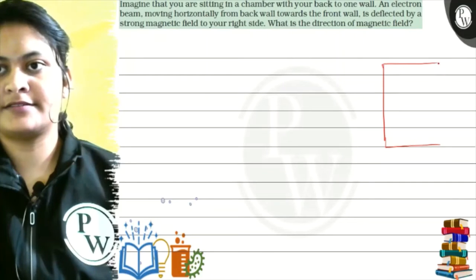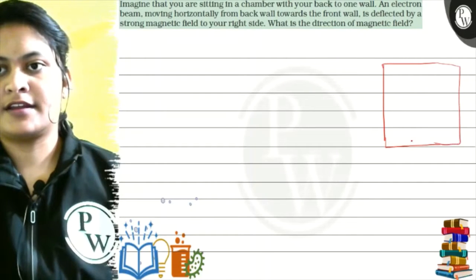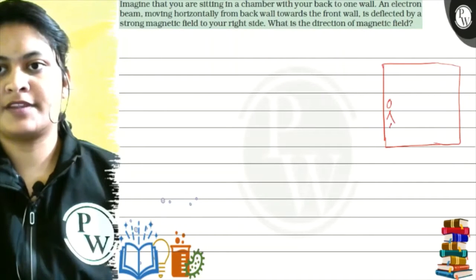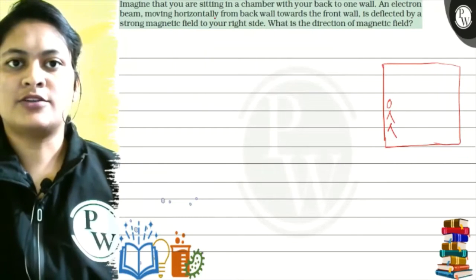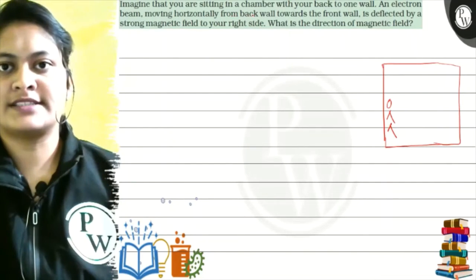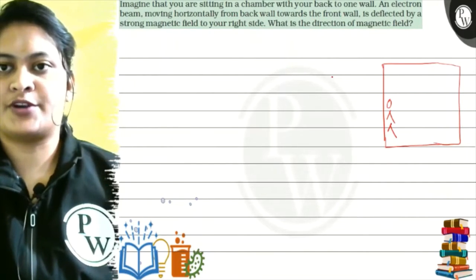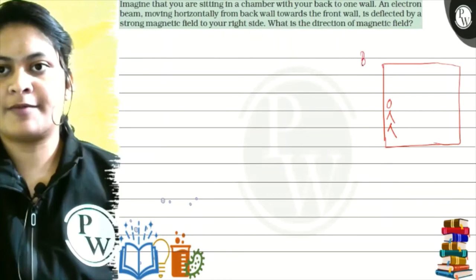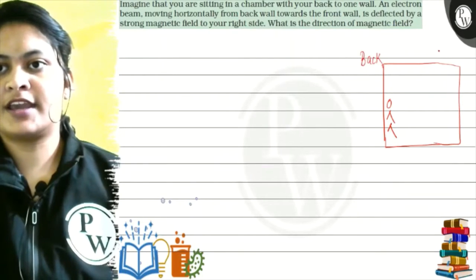We are sitting here. Right? An electron beam is moving horizontally from back towards the front wall. So, what is our back wall? What is our front wall?